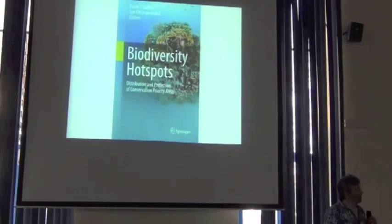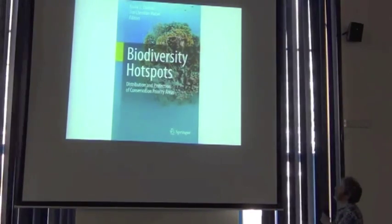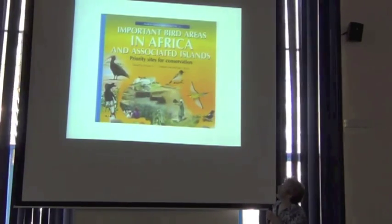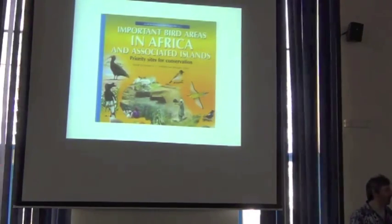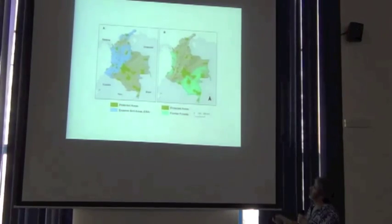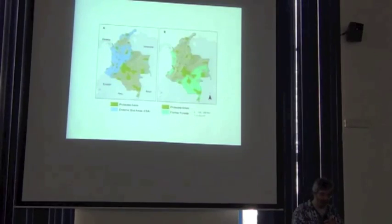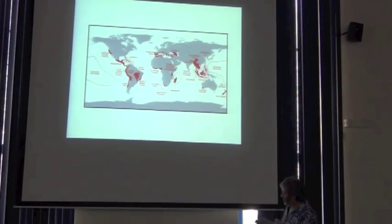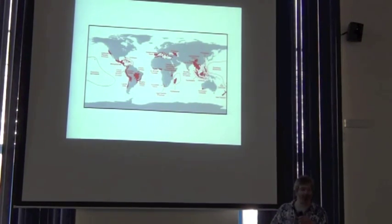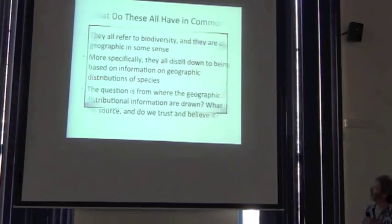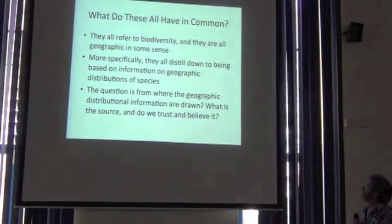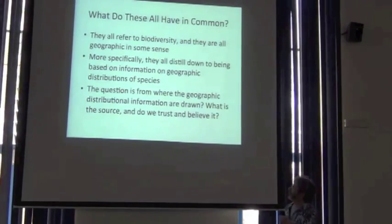I'm going to give you the example of biodiversity conservation and show you a number of products. Here's a book that summarizes biodiversity hotspots and important bird areas in Africa and associated islands. This is an analysis of endemic bird areas in blue and protected areas, frontier forests across Northwestern and South America. Here are critical areas for biodiversity conservation worldwide. What do all of those have in common? They all refer to biodiversity and they're all geographic in some sense.